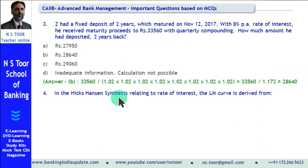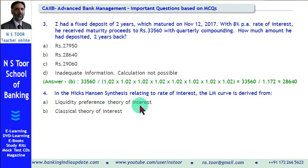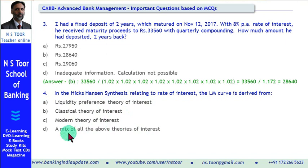Let us now go to question number 4. In Hicks-Hansen synthesis relating to the rate of interest, the LM curve is derived from — ? In the Hicks-Hansen synthesis there are two types of curves: one is the LM curve and the other is the IS curve. The options are: (A) Liquidity preference theory of interest, (B) Classical theory of interest, (C) Modern theory of interest, (D) A mix of all the above theories of interest.